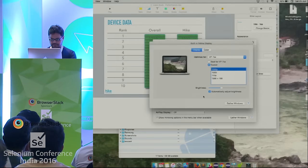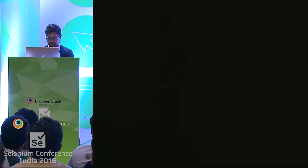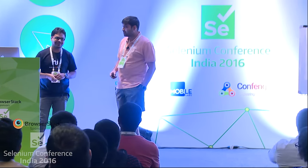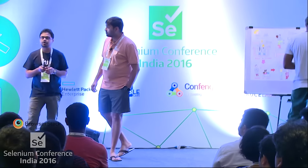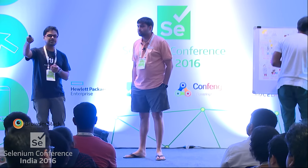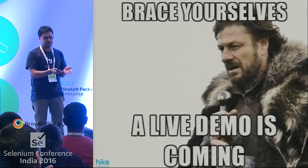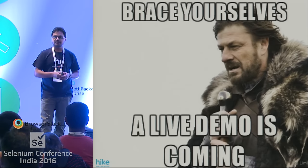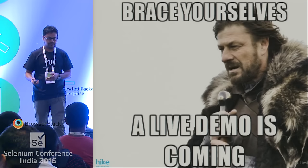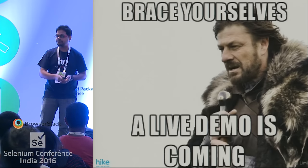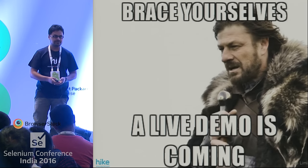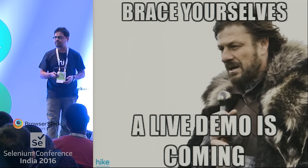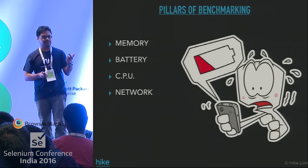So we talked about benchmarking — but a lot of questions came around network as well. That was completely from the app's point of view. There are other things in the device itself, especially Android being an OS which facilitates you to play around. Parameters to consider: network, memory, CPU usage, memory usage. What we like to call at Hike are the four pillars of benchmarking — memory, battery, CPU, and network. If I don't look at these four aspects, my app might be working fine in the UI benchmarking side but not optimized on the performance side.